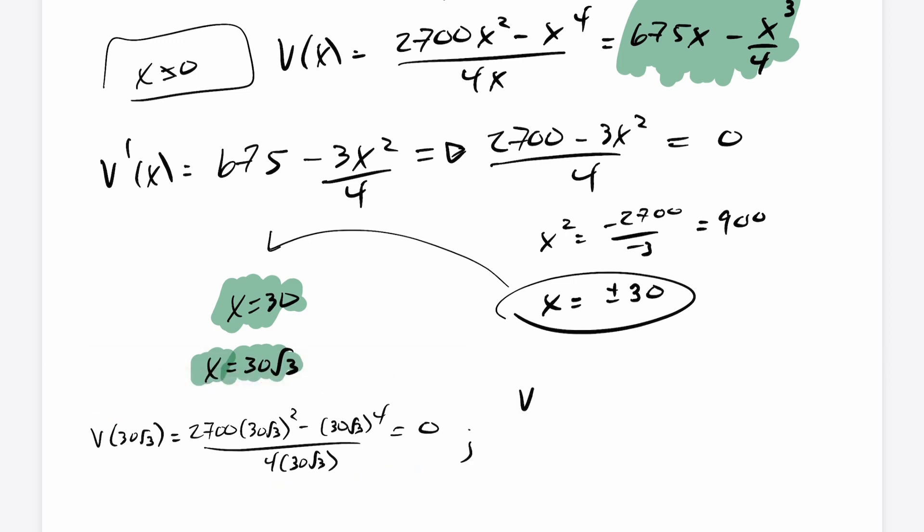And then lastly, evaluate this at 30. And you get 2700 times 30 squared minus 30 to the fourth, all over 4 times 30. And if I go ahead and calculate this, we end up getting 13,500 cubic centimeters.